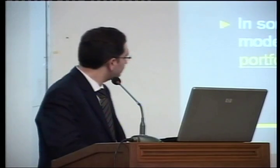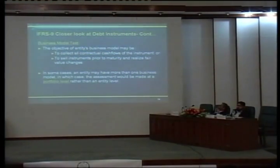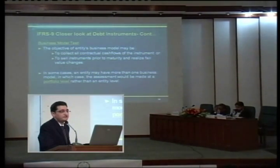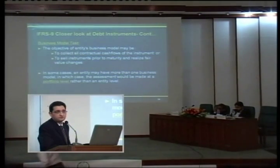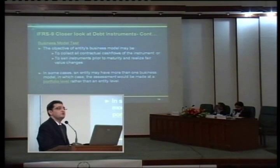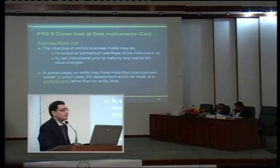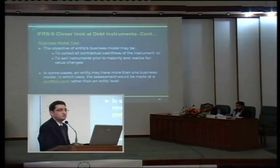Let's discuss the business model test in some detail. The business model of an entity may be to collect all contractual cash flows from the financial asset, or to sell financial assets and realize fair value changes. There can be two kinds of objectives: either financial assets are held to collect contractual cash flows, or held for selling purposes in the near term to realize fair value changes. The first objective is easily associated with traditional banks and entities that hold instruments to collect cash flows over a long period for strategic purposes.